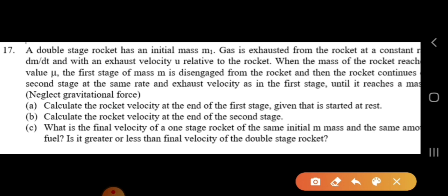Let's discuss this with the help of a problem on variable mass systems. A double stage rocket has an initial mass m1. Gas is exhausted from the rocket at a constant rate rho = dm/dt with an exhaust velocity u relative to the rocket. When the mass of the rocket reaches a value mu, the first stage m1 is disengaged, and the rocket continues the second stage at the same rate and exhaust velocity until it reaches mass mf.